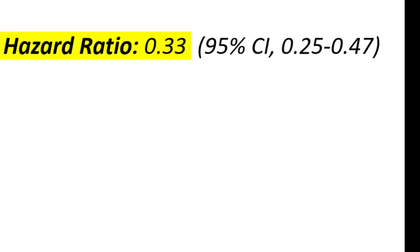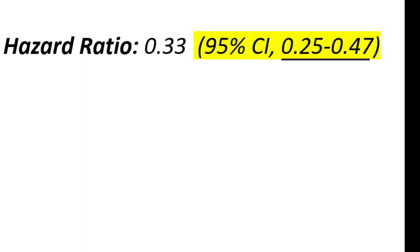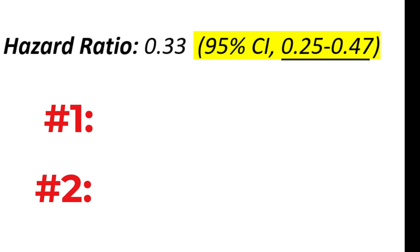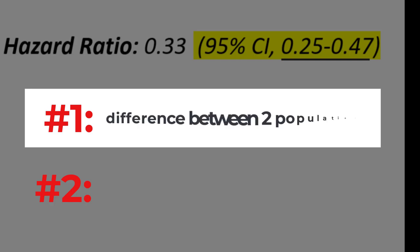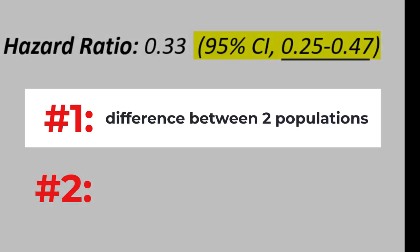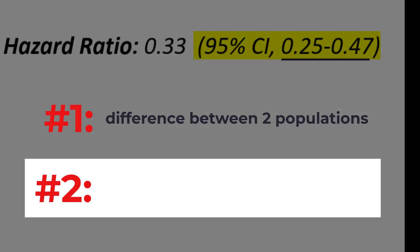The hazard ratio is 0.33, which is less than 1, and shows the normal BMI group has a longer time to event than the overweight obesity group. The confidence interval of the hazard ratio is between 0.25 and 0.47. This means that if this study was run 100 times, 95 times the hazard ratio would fall between 0.25 and 0.47. This tells us two things: first, 95% of the time the hazard ratio never crosses 1, so there is a difference between the two populations. Second, the confidence interval is not very wide, so the hazard ratio might be considered precise.